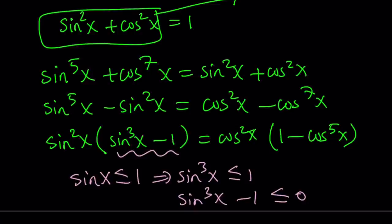Sine cubed x is also less than or equal to one. But when you subtract one from both sides, you notice that this expression is non-positive, or less than or equal to zero. So this is less than or equal to zero.